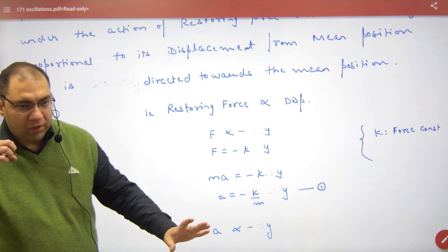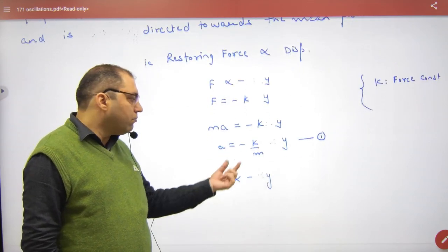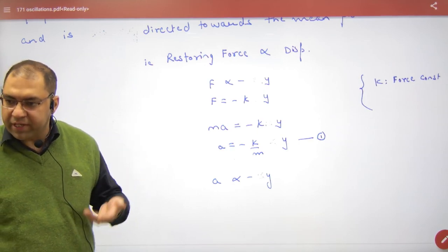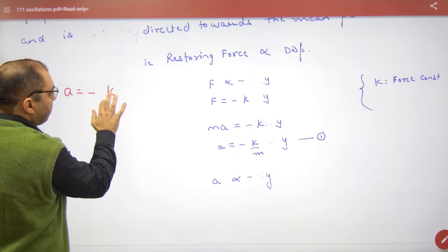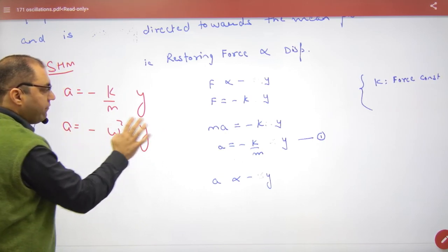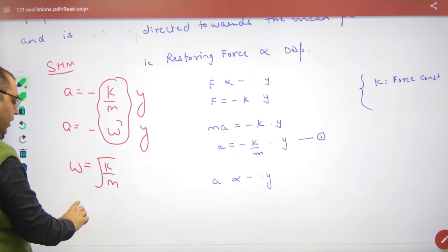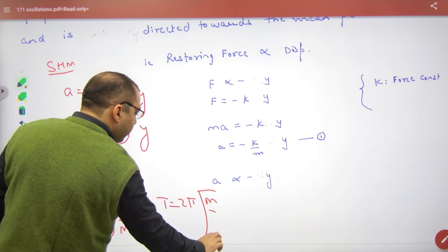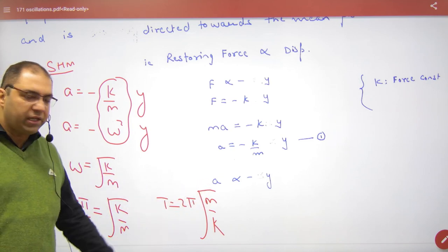In a spring-mass system, the restoring force is minus k·y, meaning mass times acceleration equals minus k·y. So acceleration is proportional to displacement with a negative sign, which means the spring-mass system is in SHM. Acceleration equals minus(k/m)·y. Comparing with minus ω²·y, we get ω = √(k/m). Since ω = 2π/T, time period T = 2π·√(m/k), where m is the inertia factor and k is the spring constant factor.